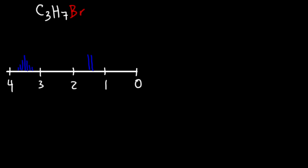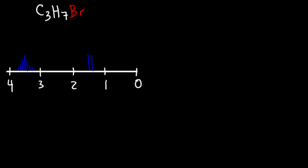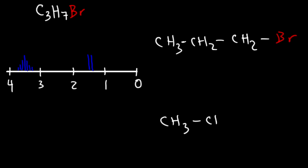Let's draw all the constitutional isomers of C3H7Br. We have three carbon atoms and there are only two locations in which we could put the bromine atom — on carbon one or on carbon two. So it's either 1-bromopropane or 2-bromopropane. We can draw 1-bromopropane as CH3CH2CH2Br.